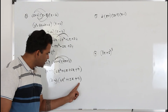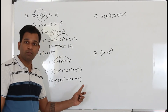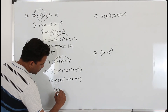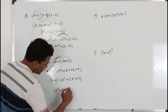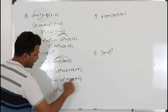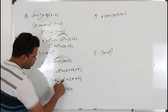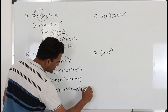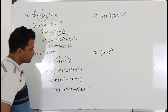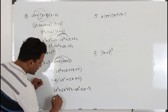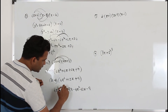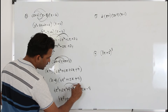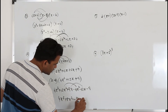Now take x and multiply everything: 4x cube, 12x square, 9x. When you multiply by negative 1: minus 4x square, minus 12x, minus 9. Simplify the like terms: 4x cube, 12 minus 4 is 8x square, 9 minus 12 is minus 3x, minus 9. That's how you simplify.